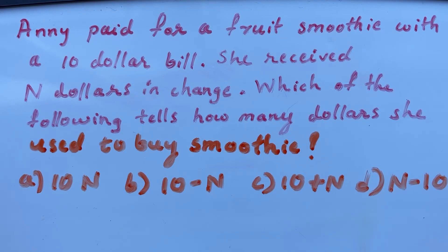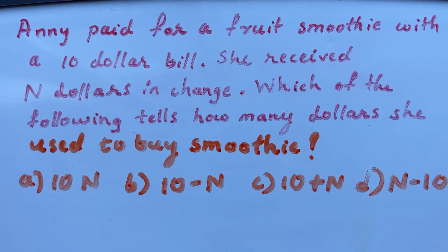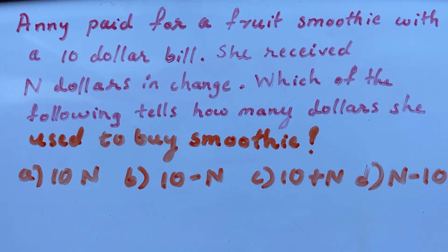Namaste, welcome back to my channel. Today's question: Annie paid for a fruit smoothie with a ten dollar bill. She received n dollars in change. Which of the following tells how many dollars she used to buy the smoothie? Options are: A) 10 times n, B) 10 minus n, C) 10 plus n, and D) n minus 10.